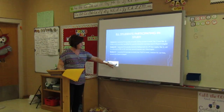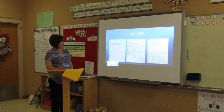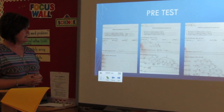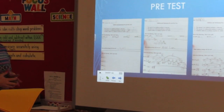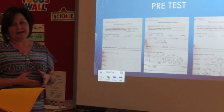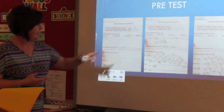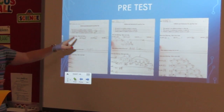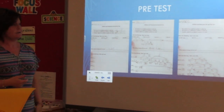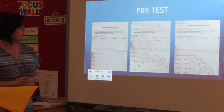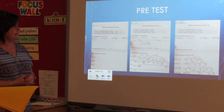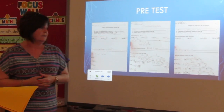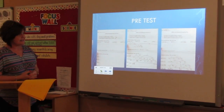I gave a pretest on addition and subtraction before starting the study. Student A got zero out of eleven problems correct and didn't show any of her work, so I'm assuming she was guessing answers. Student B attempted to show work but still only got one out of eleven problems correct. Student C did not show any work with addition but used the correct number line strategy for subtraction and got six out of eleven problems correct.